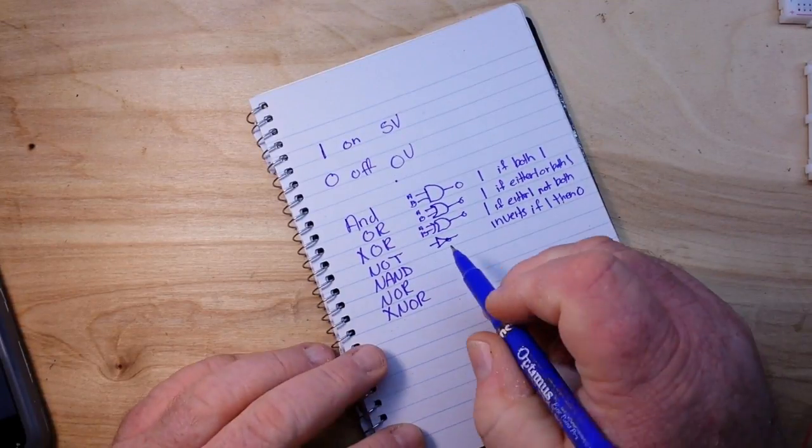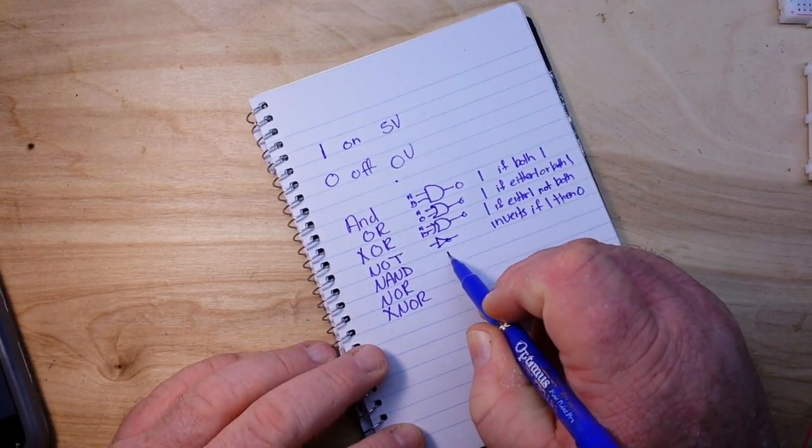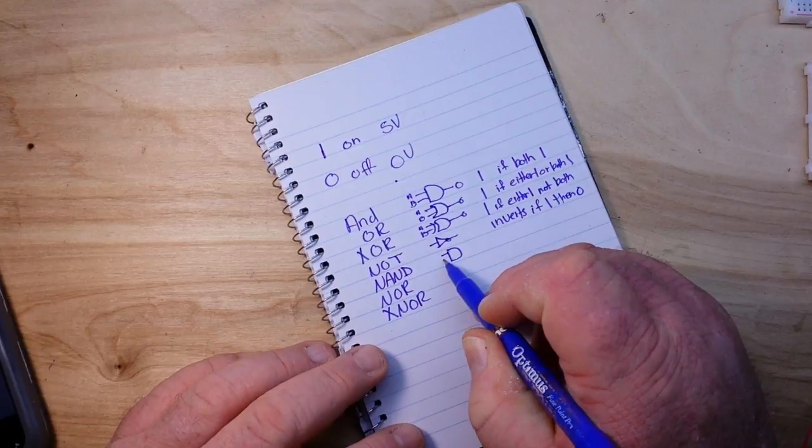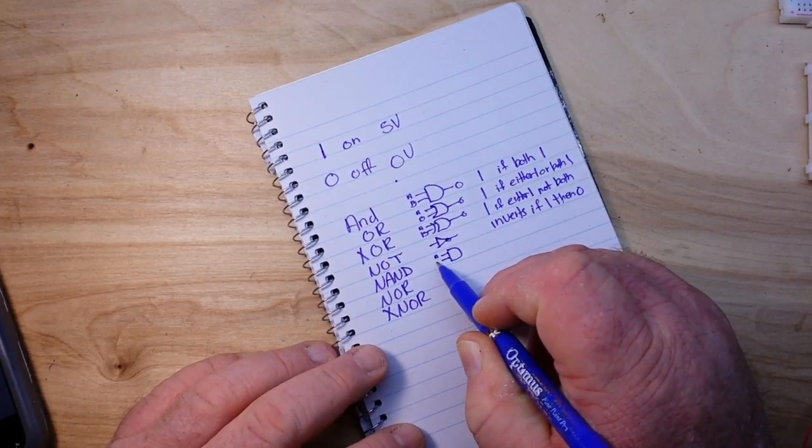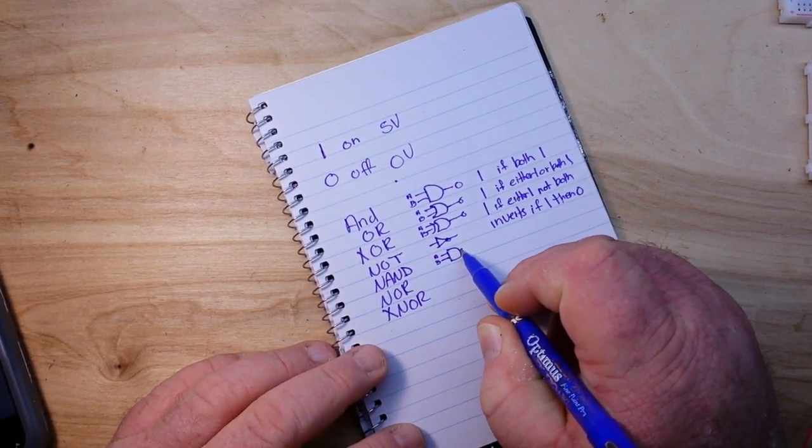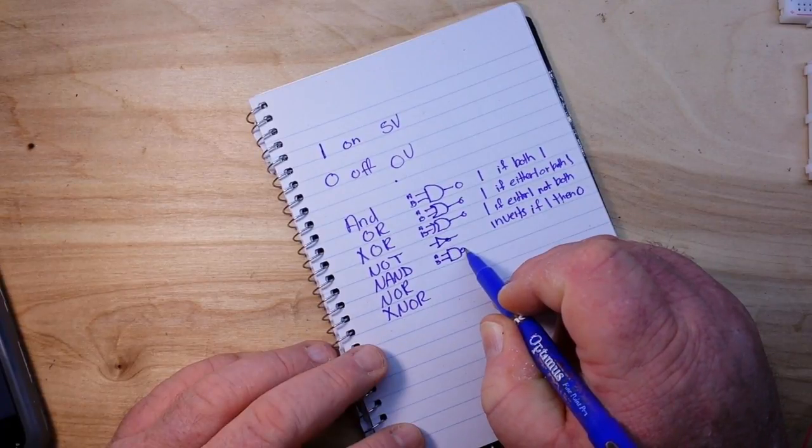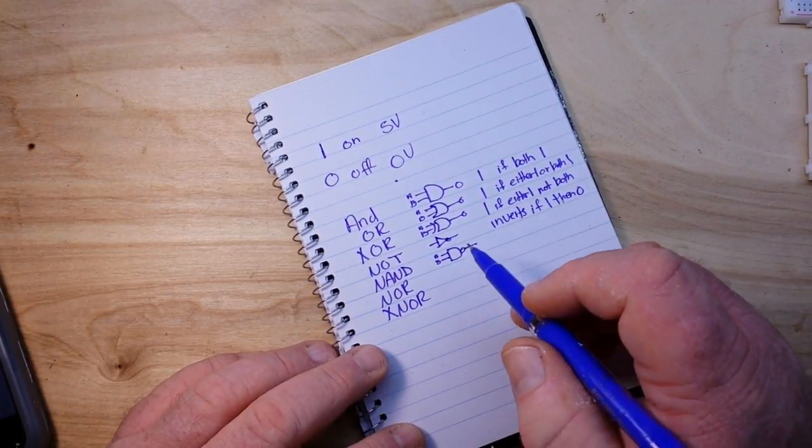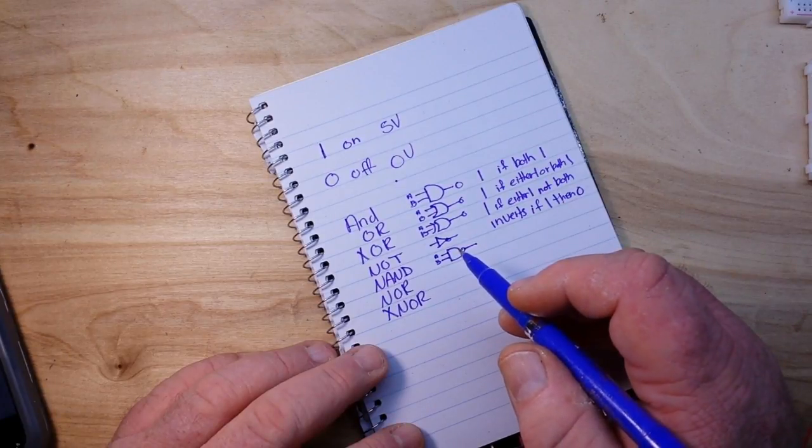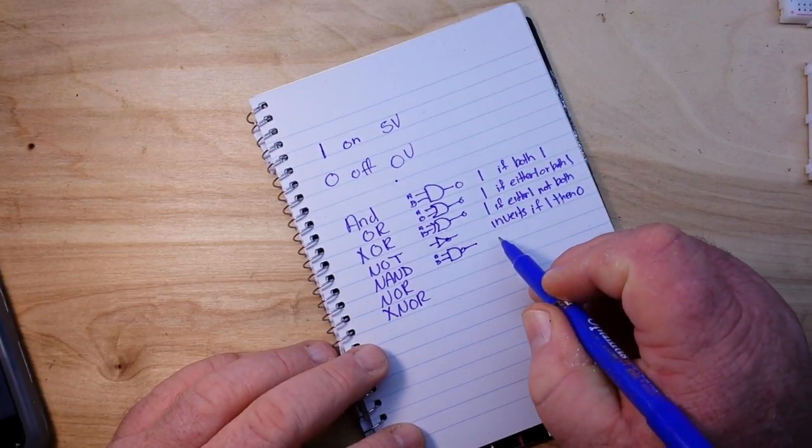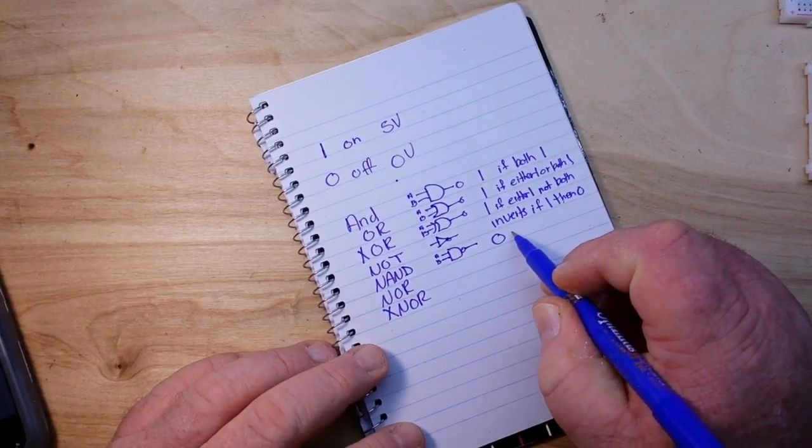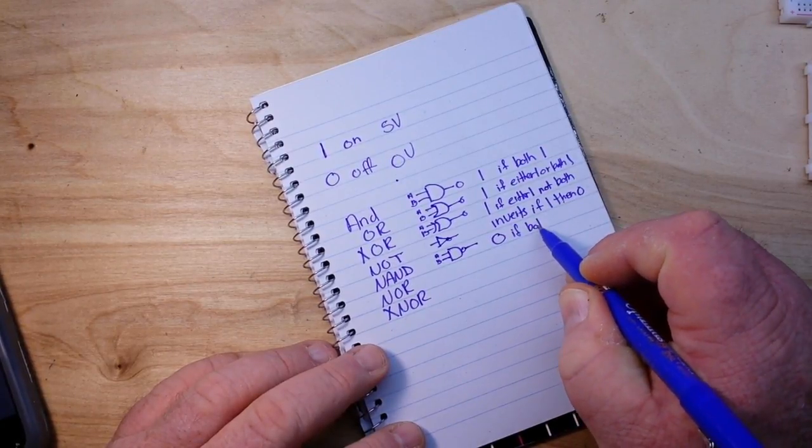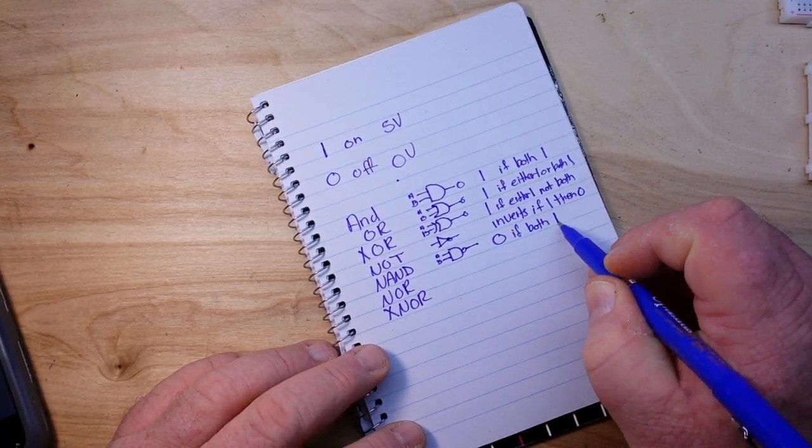Next up we have the NAND gate. The NAND gate looks a lot like the AND gate except it has the inverter here, so it is an AND gate followed by a NOT gate. In this case the output is false if both are true.